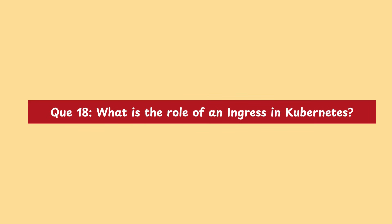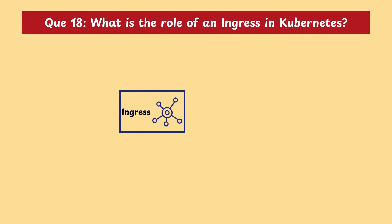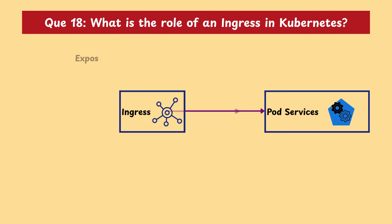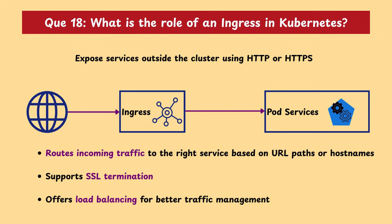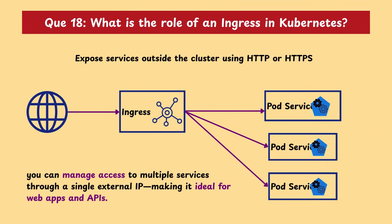Moving on with our next question: what is the role of ingress in Kubernetes? Ingress in Kubernetes is used to expose services outside the cluster using HTTP or HTTPS. It acts like a smart router that routes incoming traffic to the right service based on URL paths or host names, supports SSL termination, and offers load balancing for better traffic management. With ingress, you can manage access to multiple services through a single external IP.